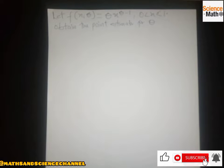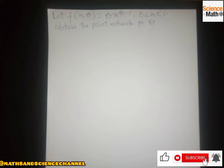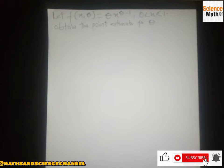Hello everyone, welcome once again to my channel. This is the third part of the estimator series. The question says: let the function f(x; θ) = θx^(θ−1), given the interval 0 < x < 1. We should obtain the point estimator for θ, and we have to use the method of moments estimator.